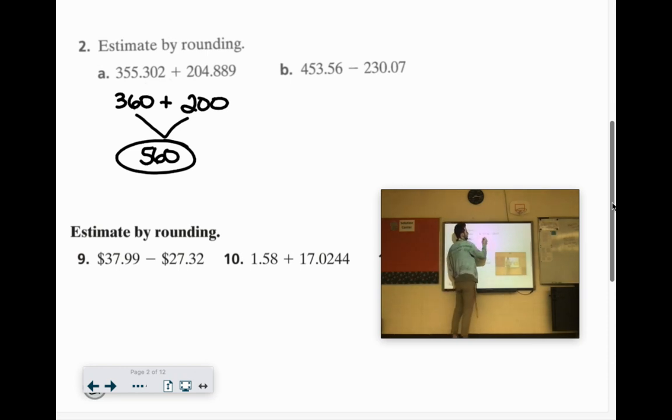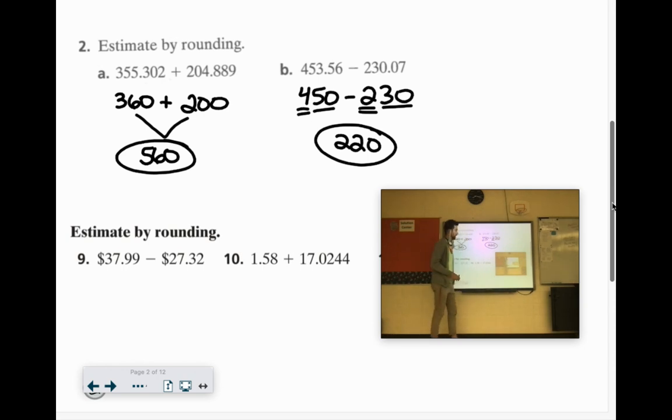453. Let's call it 450. Minus 230.07. Let's call it 230. I know 50 minus 30 is 20. 4 minus 2 would be 2. So I think 220 is a pretty good estimate for that.